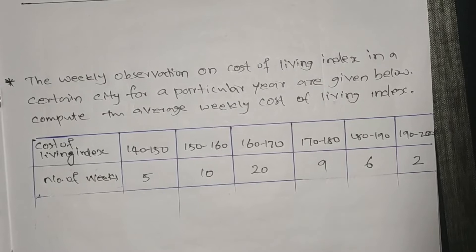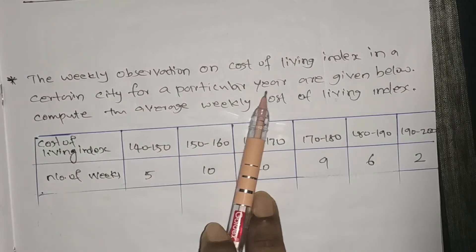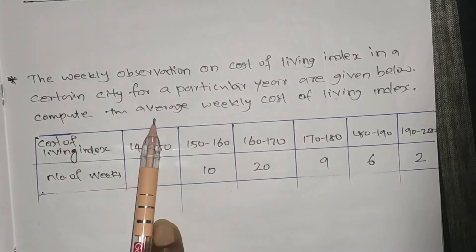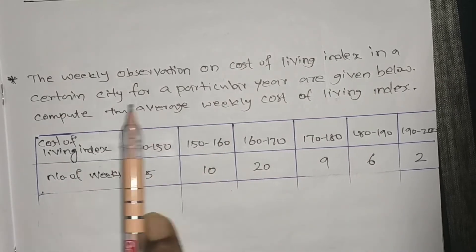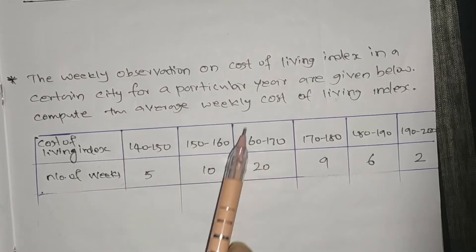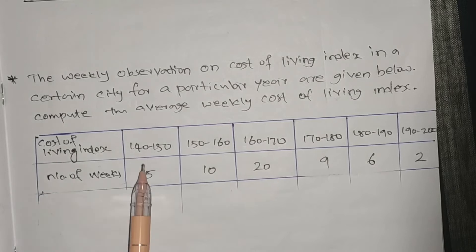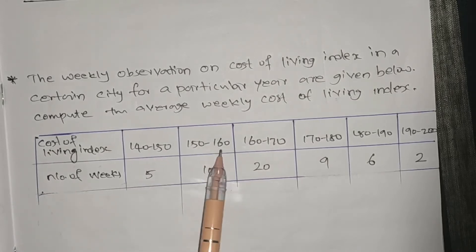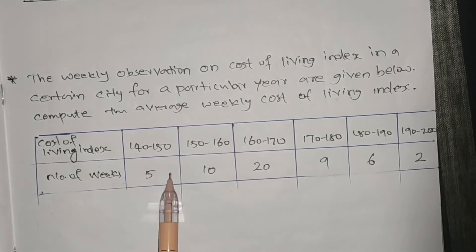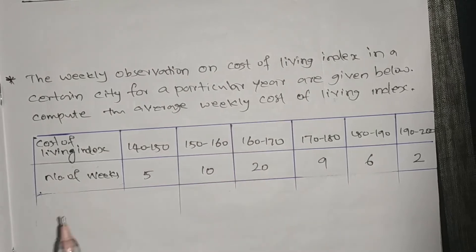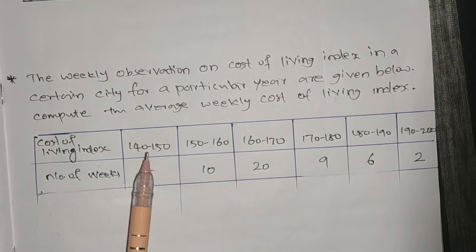First question: the weekly observations on cost of living index in a certain city for a particular year are given below. Compute the average weekly cost of living index. The classes are cost of living index 140 to 150, 150 to 160, and so on, with number of weeks as frequency. This is grouped data.